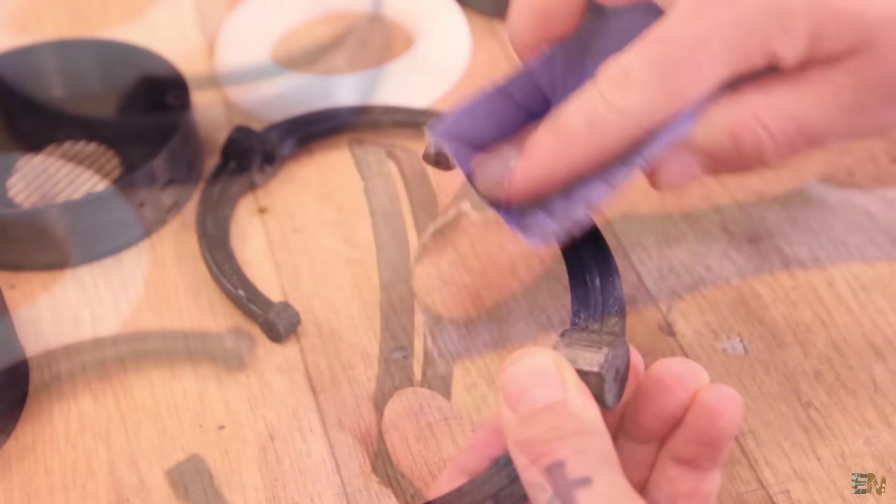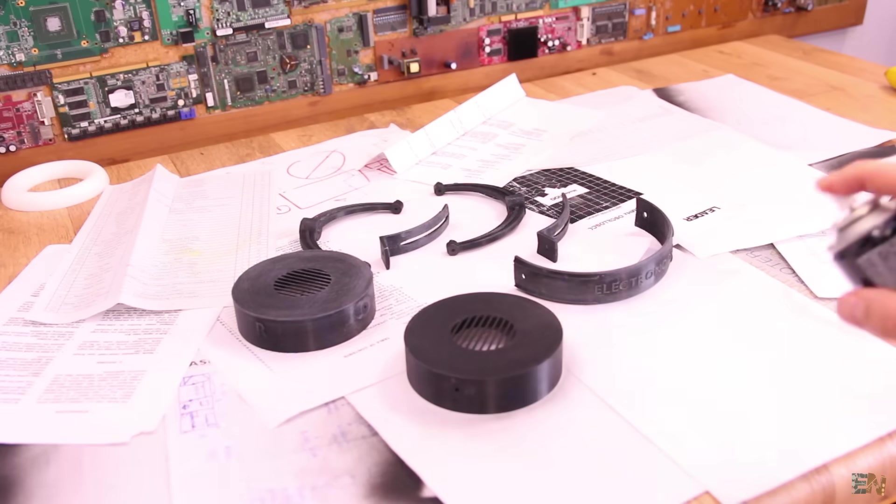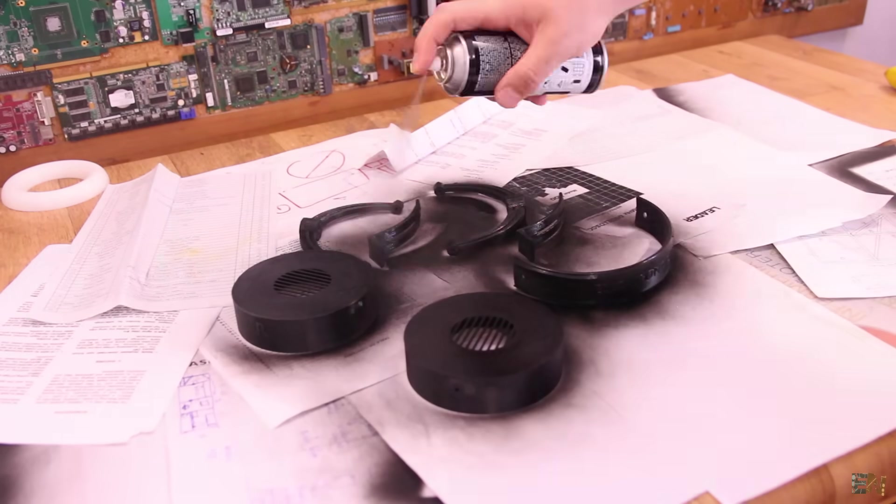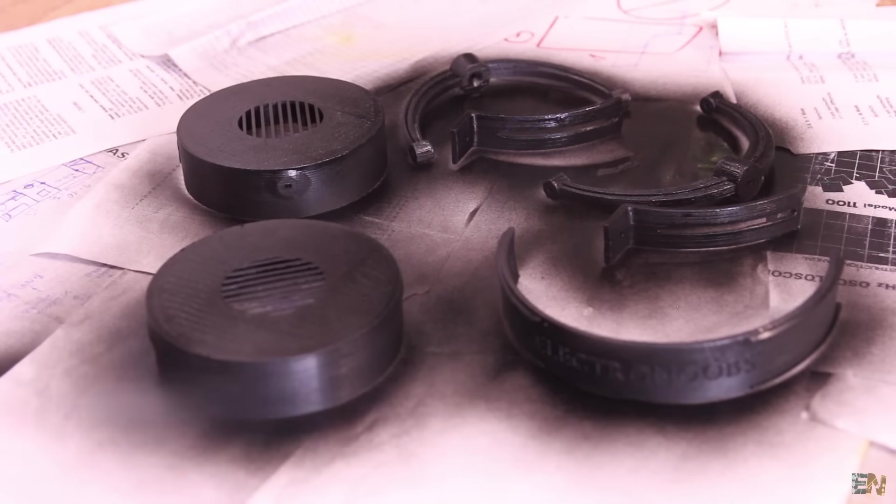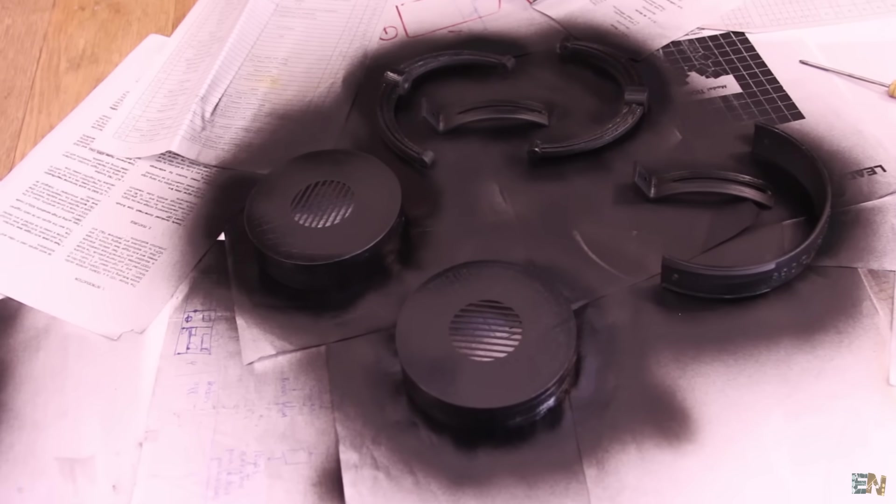Sandpaper a little bit each part. In my case I've also used some spray paint to make them look better. I've used some black color and applied a few layers. If you also have a primer, this will go even better. You can use multiple colors if you want.